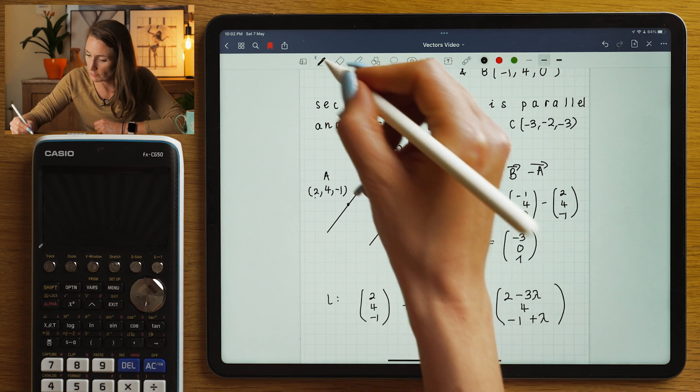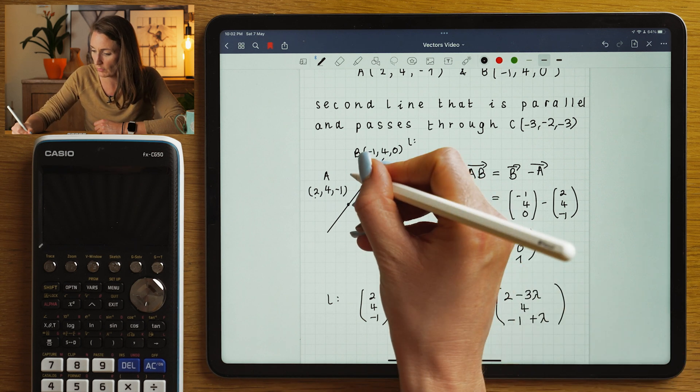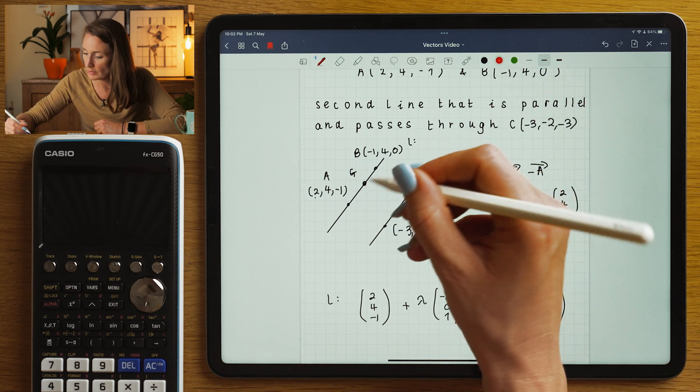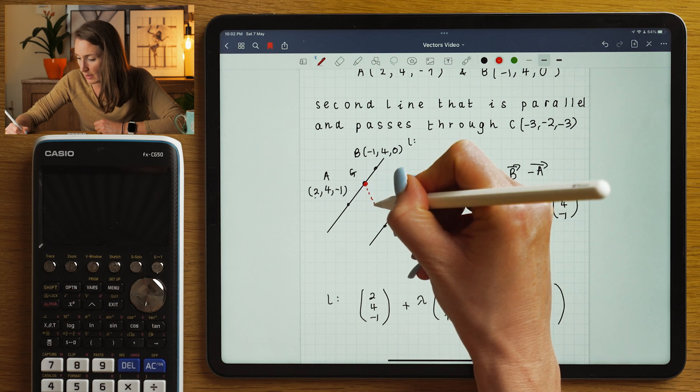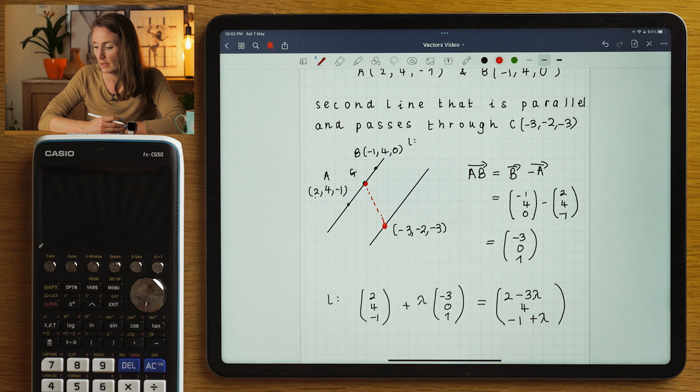Now, this is pretty useful. So we're going to call this, this is just a general point on our line. We can call it general point. What we're going to do is we'll find a vector that will join a general point on this line to that specific point there.